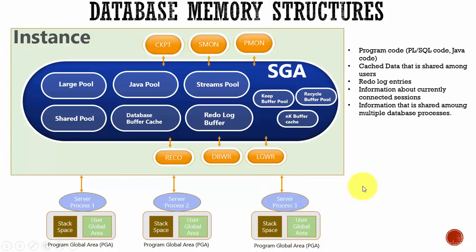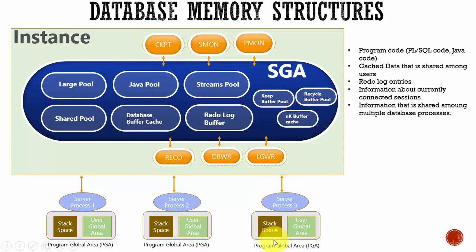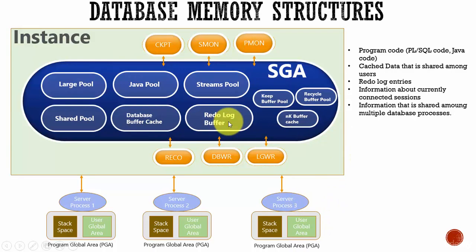In summary, there are two memory structures: the Shared Global Area and the Program Global Area. The information stored in the Shared Global Area is shared among all the processes, whereas the information stored in the Program Global Area is exclusive to the server process. We will be learning about each one of these memory structures in detail in the coming sessions.